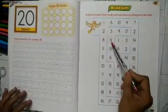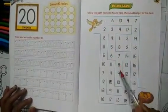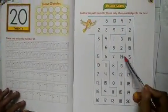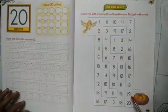1, 2, 3, 4, 5, 6, 7, 8, 9, 10, 11, 12, 13, 14, 15, 16, 17, 18, 19, 20.